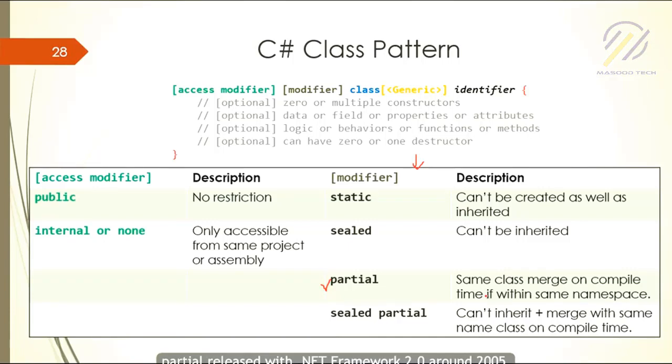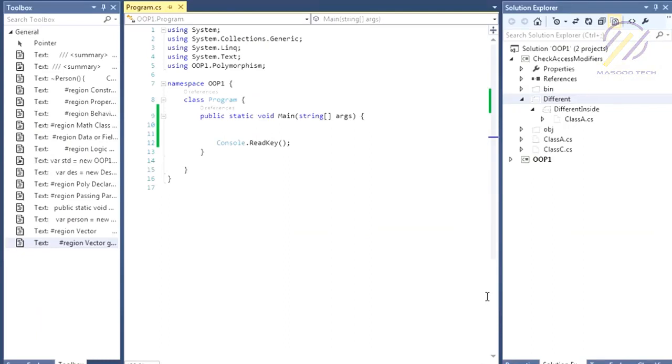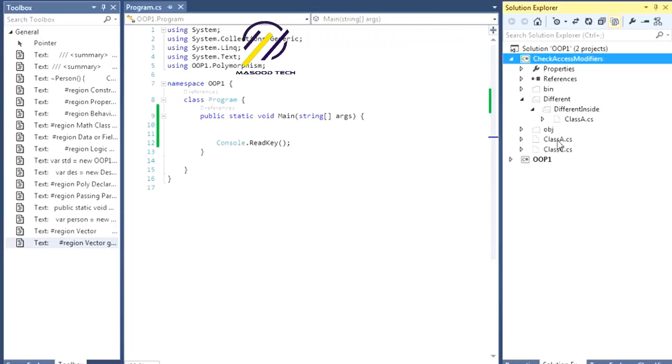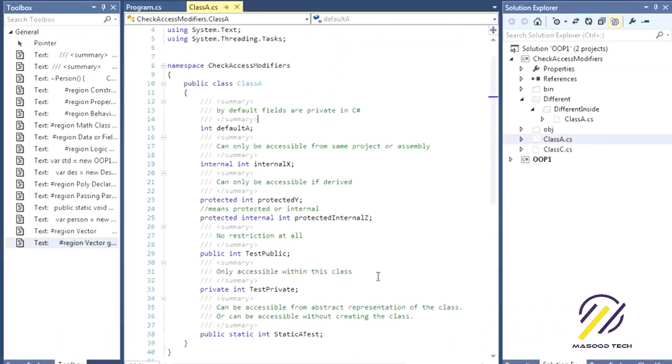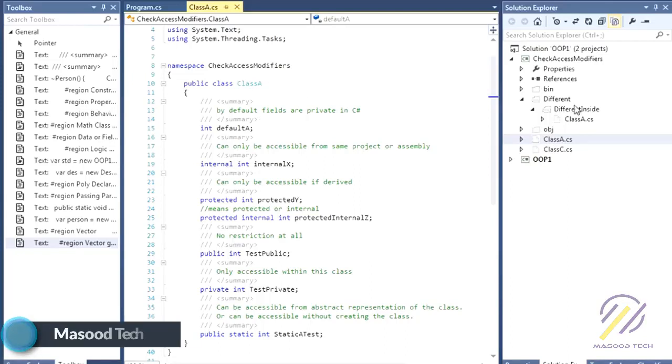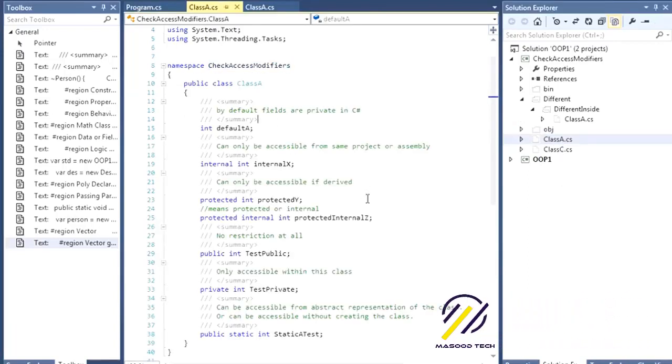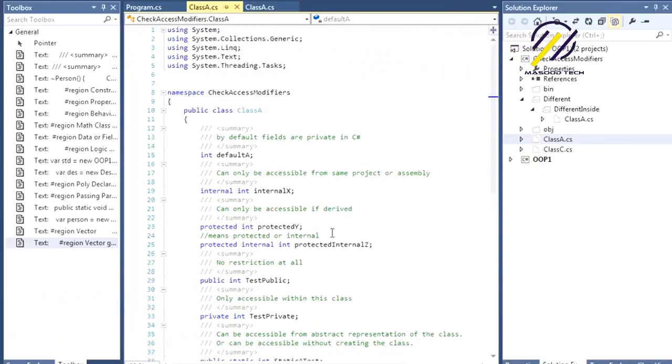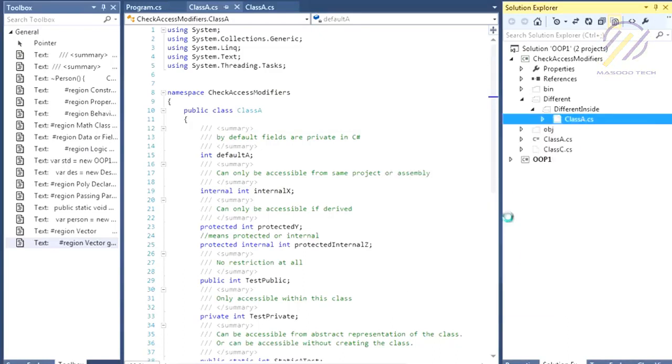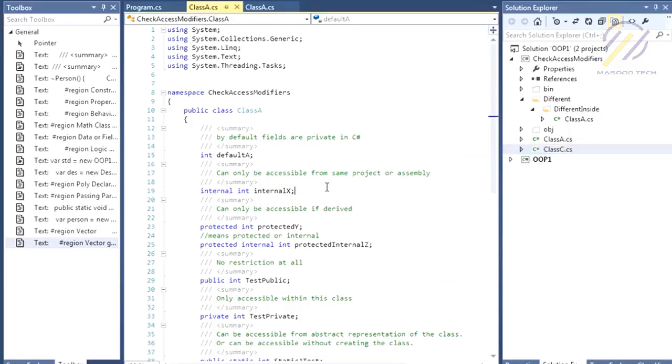Let's see some examples. We are in Visual Studio. I have a few classes in there—this is the class A which has some properties and fields with access modifiers. We have a same class name as class A in a different directory, but I put the namespaces the same. The slides say that partial classes only combine or merge if they're in the same namespace. Let's include class C as well.